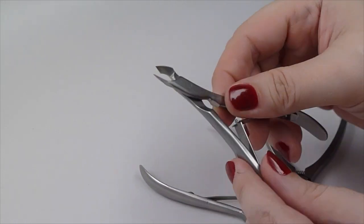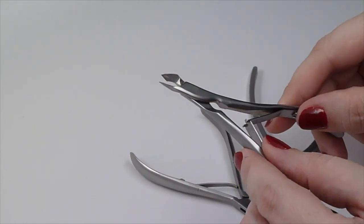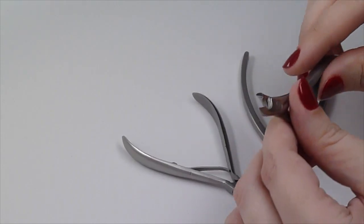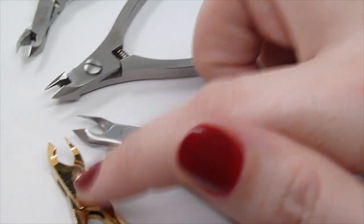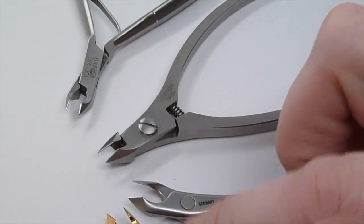Now, for decades, high carbon steel was used for cuticle nippers. And that steel holds an edge very well, but it can develop rust. So it's often plated in something like gold, chrome, or nickel.